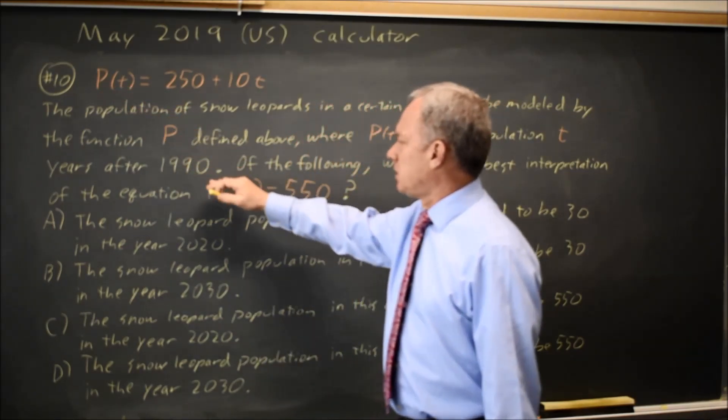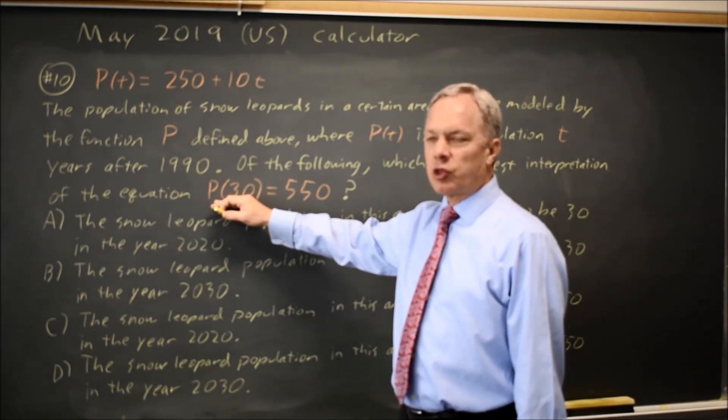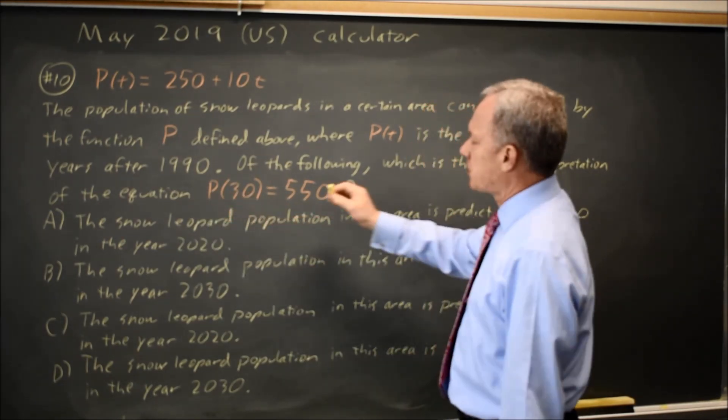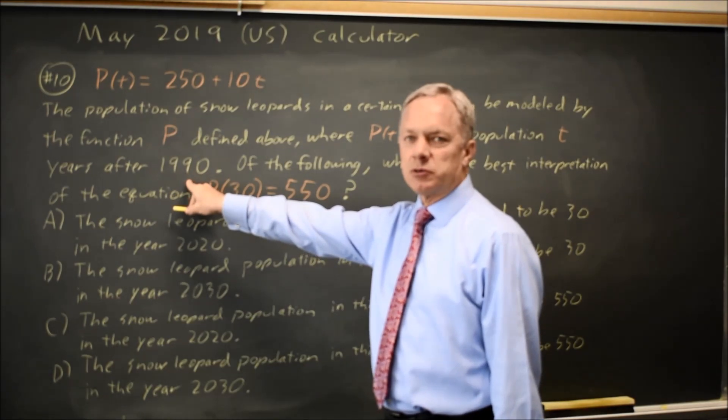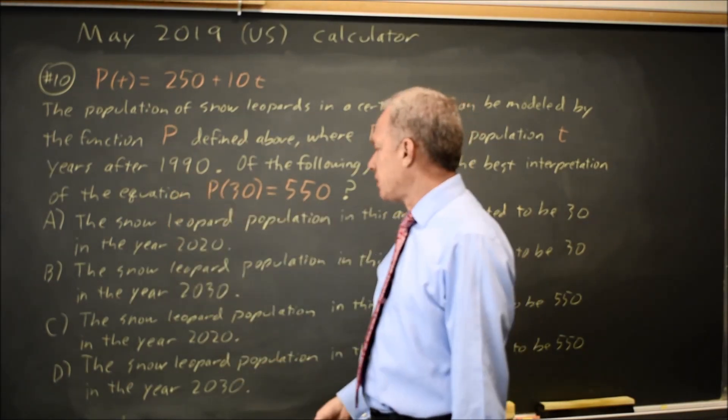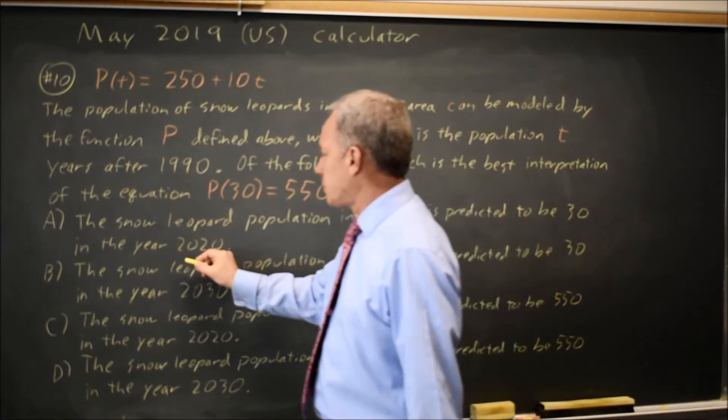P(T) and P(30), 30 is T, where T is years after 1990, so it should be 30 years after 1990, which is 2020.